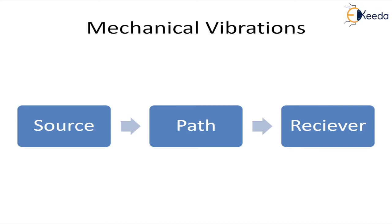If we break up mechanical vibrations, we get three components. First, the source which is producing the mechanical vibration. Second, the path — what these vibrations are carried on, which may be through the structural path or through the air. Third, the receiver, which is the responding system excited by the vibrating frequencies generated at the source. Vibrations can be controlled at any of these three parts.